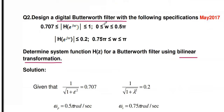This is a complete 15-mark or 13-mark question. The question: design a digital Butterworth filter with the following specifications — |H(e^jω)| lies between 0.70721 whenever the frequency ω is between 0 and 0.5π; then |H(e^jω)| ≤ 0.2 whenever the frequency is from 0.75π to π. Determine the system function H(z) for Butterworth using bilinear transformation.